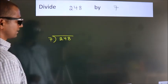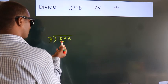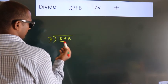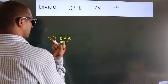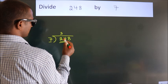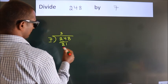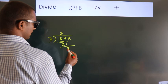Next, here we have 2. Here 7. 2 is smaller than 7, so we should take 2 numbers: 24. A number close to 24 in the 7 table is 7 threes, 21. Now we should subtract. We get 3.